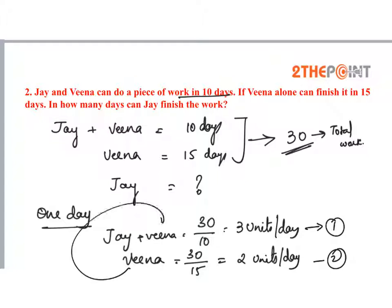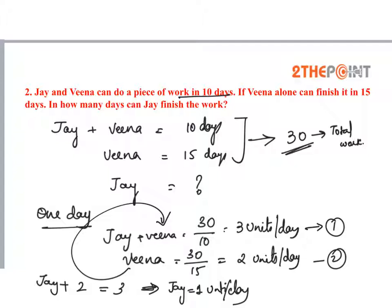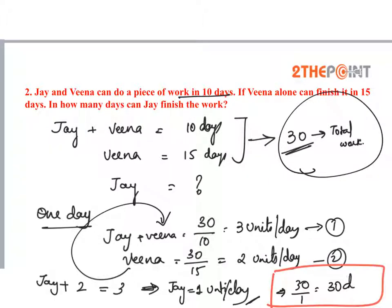Substitute the value of Veena in the first equation. We get Jay plus Veena equals 3 units, and Veena equals 2 units, so Jay equals 1 unit per day. If Jay does 1 unit of work per day, then to complete the total work of 30 units he takes 30 days. That is, 30 by 1 equals 30 days.